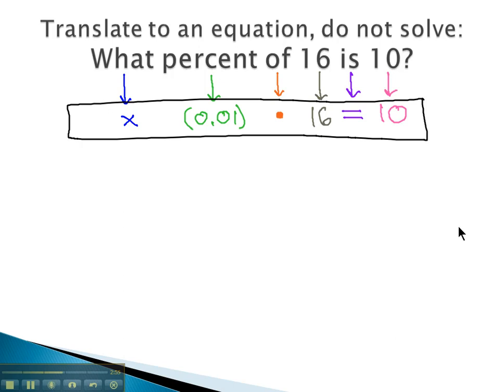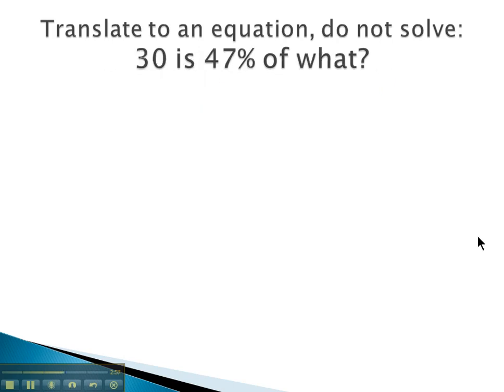Let's try one more where we translate the problem, still not solving it, just practicing on this translating idea. Thirty is forty-seven percent of what? Well, thirty's already a number, so we don't have to do any translating there.